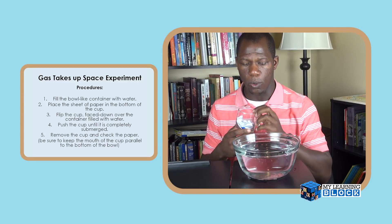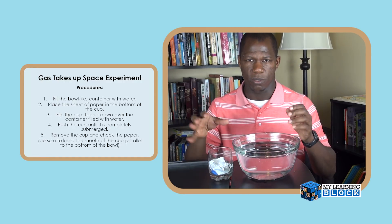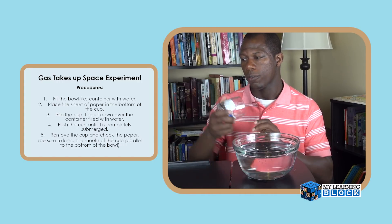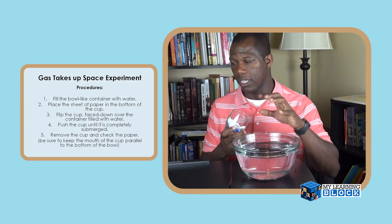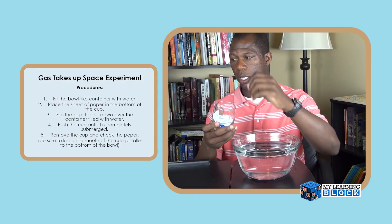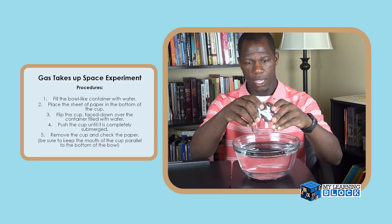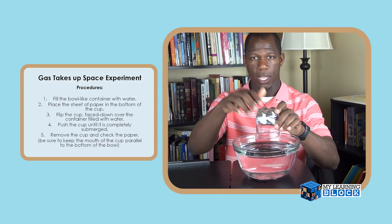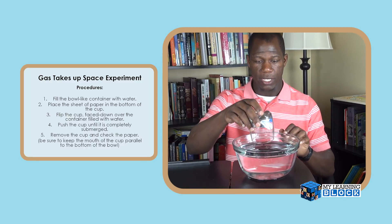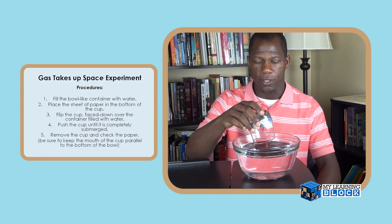The first step is to fill the bowl with water, and you want to make sure the water is at about the same level as the cup — that will make sure you're not cheating in any form or fashion. Then flip the cup face down over the container filled with water. After that, push the cup until it is completely submerged. Then remove the cup and check the paper — it's that simple, five steps. Be sure the mouth of the cup is parallel to the bottom, meaning it goes straight in; don't tilt it, as that can mess up the experiment.